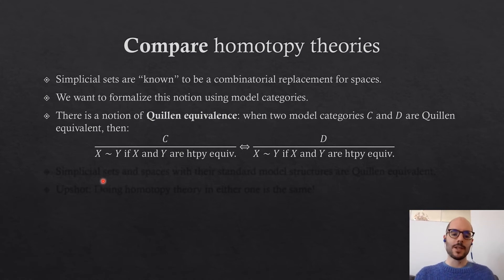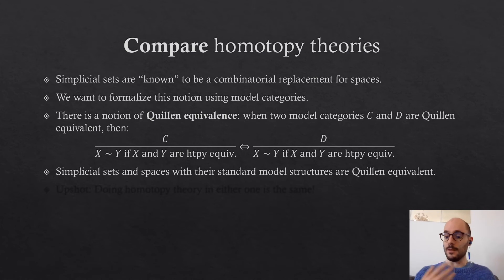If this is the case, then the category you obtain by starting from your category and identifying homotopy equivalent objects is equivalent to the one you get when you start from D. The main theorem of the lecture is that simplicial sets and topological spaces are Quillen equivalent, so they have the same homotopy theory in a precise sense.